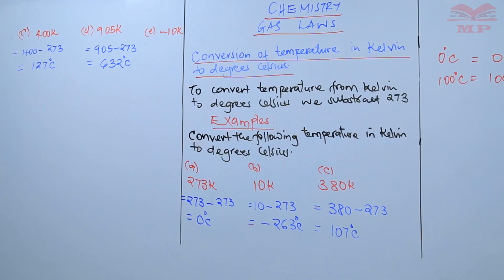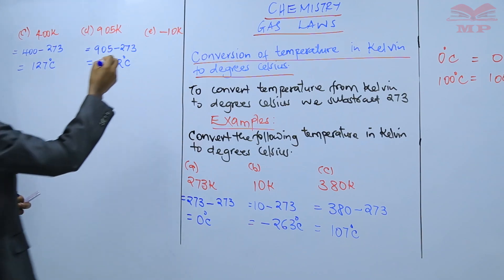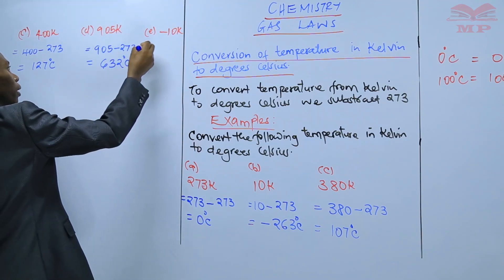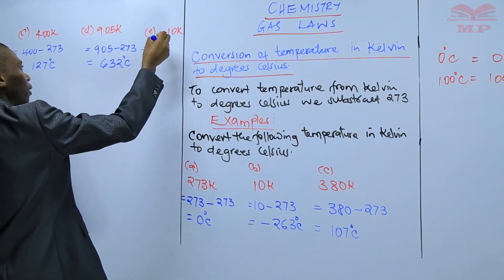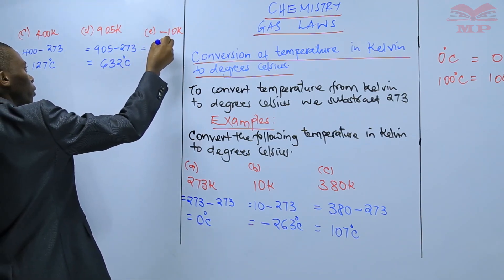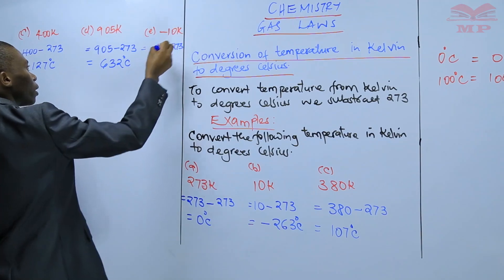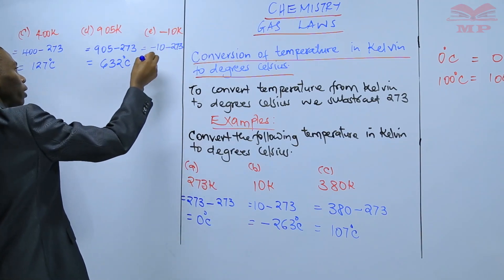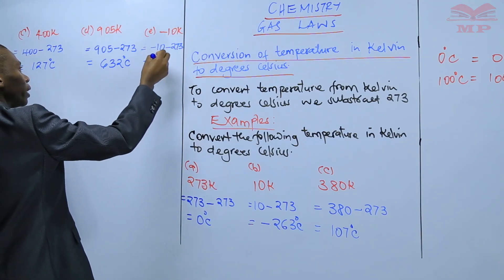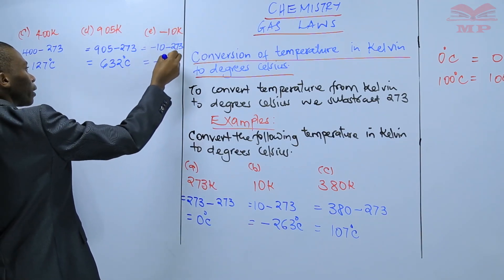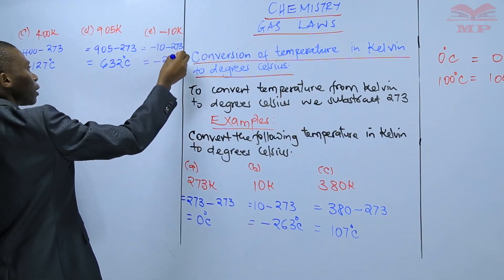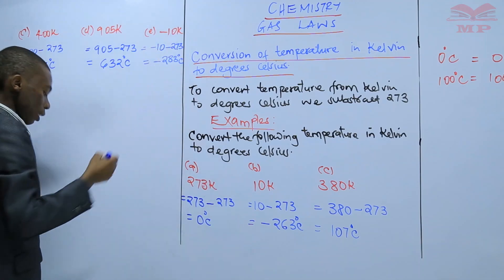Lastly, negative 10 Kelvin to degrees Celsius: negative 10 subtract 273 gives you negative 283 degrees Celsius.